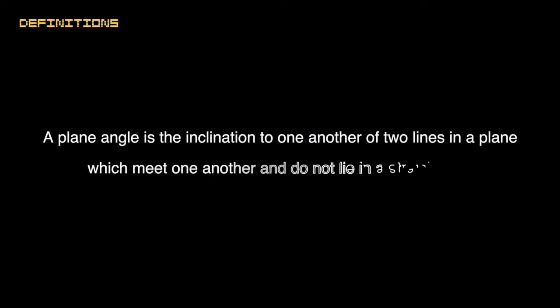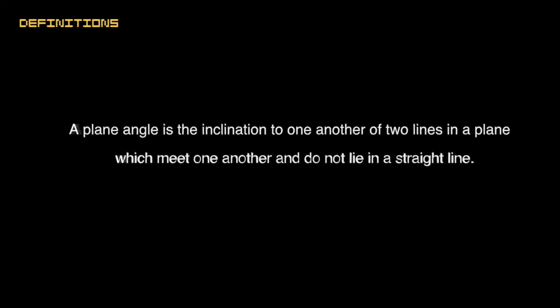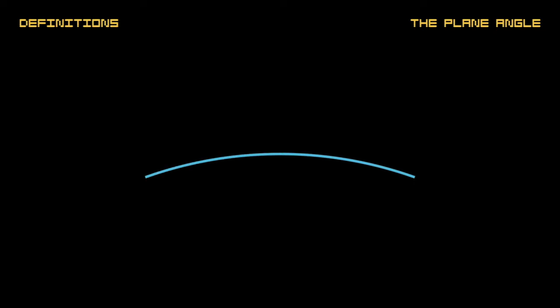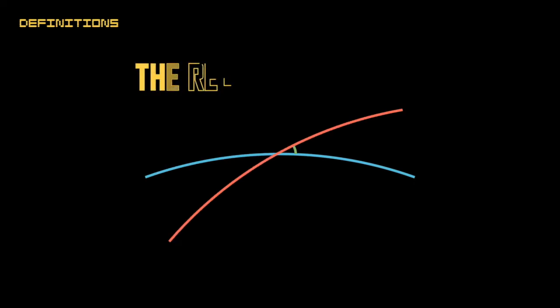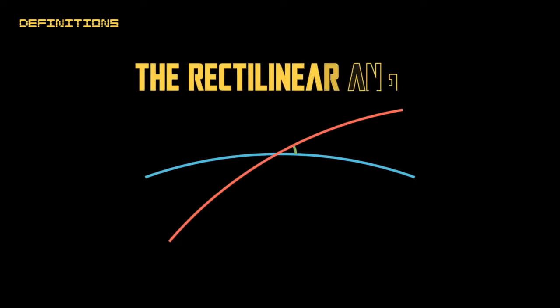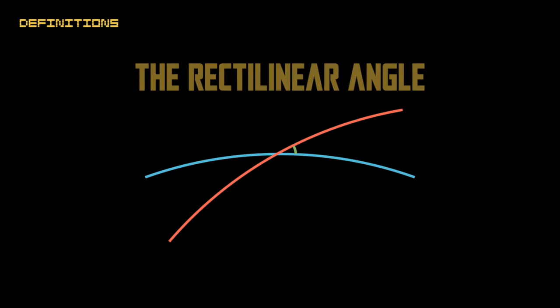A plane angle is an inclination to one another of two lines in a plane that meet one another and do not lie in a straight line. From this point forward, an angle will often be marked as a short curved line or a dot between lines.